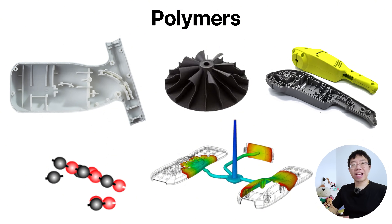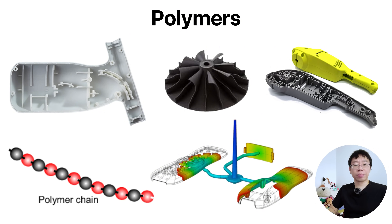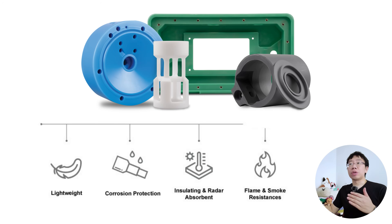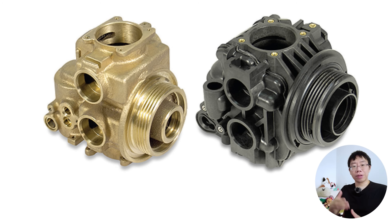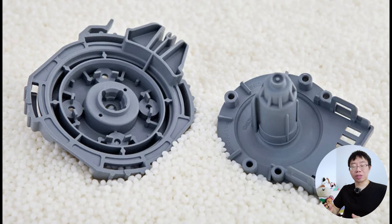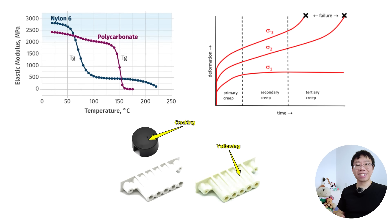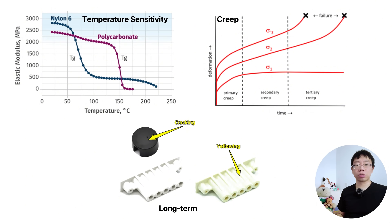Moving on, polymers and engineering plastics are indispensable in function-oriented design and prototyping. Polymers excel when weight reduction, electrical insulation, chemical resistance, and vibration damping matter more than absolute stiffness. They also allow for complex geometry without secondary machining. The trade-off you have to make for plastics is sensitivity to temperature, creep, and long-term aging.